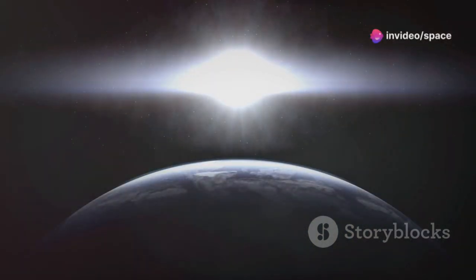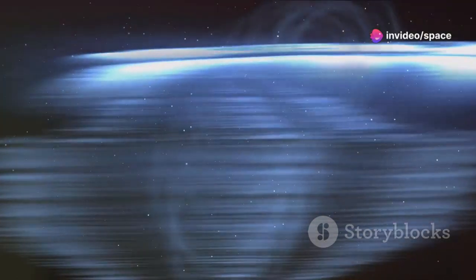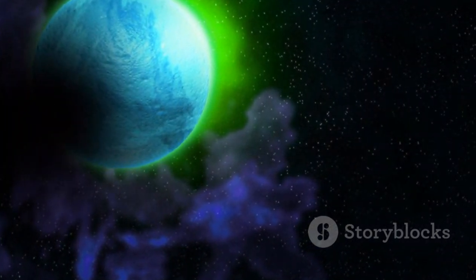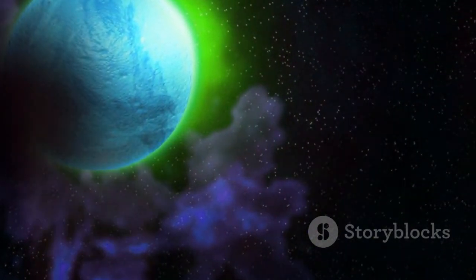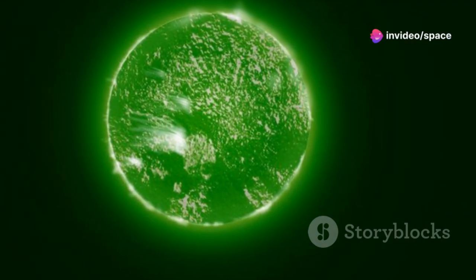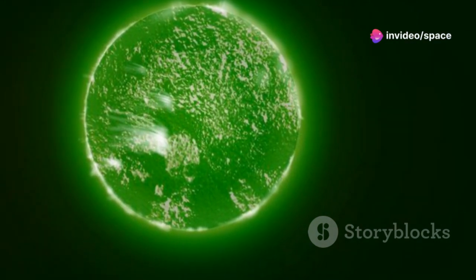It flickers with an unusual rhythm, a rhythm that hints at something more than just a star, something artificial, something created. This, my friends, is the intriguing enigma of Proxima Centauri b, or Proxima b for short, a planet orbiting the closest star to our sun, just over four light years away.